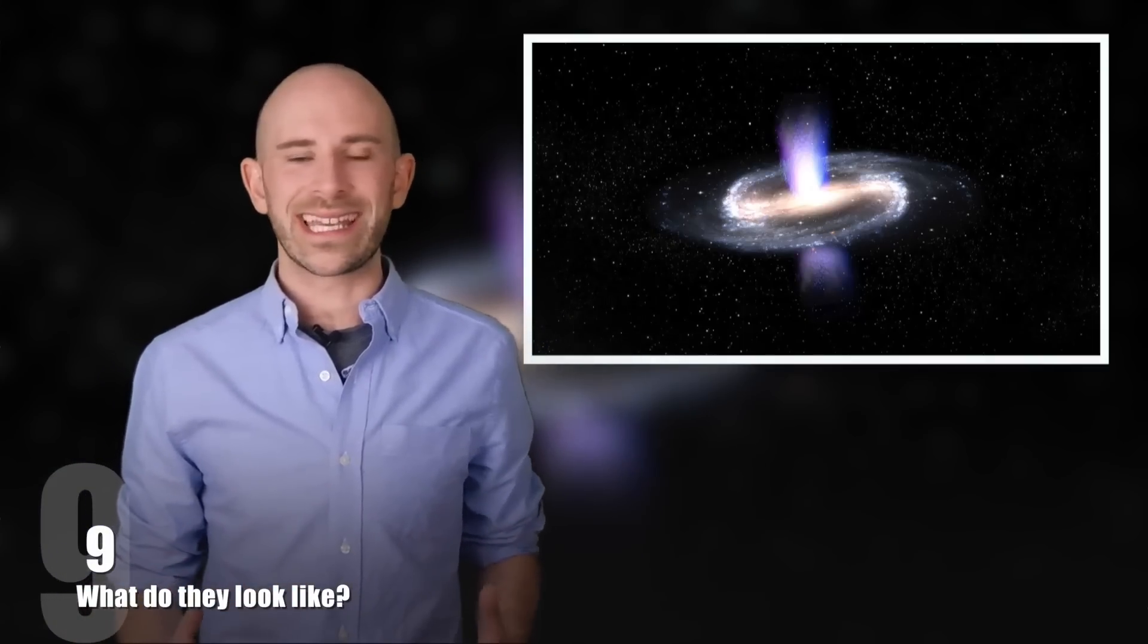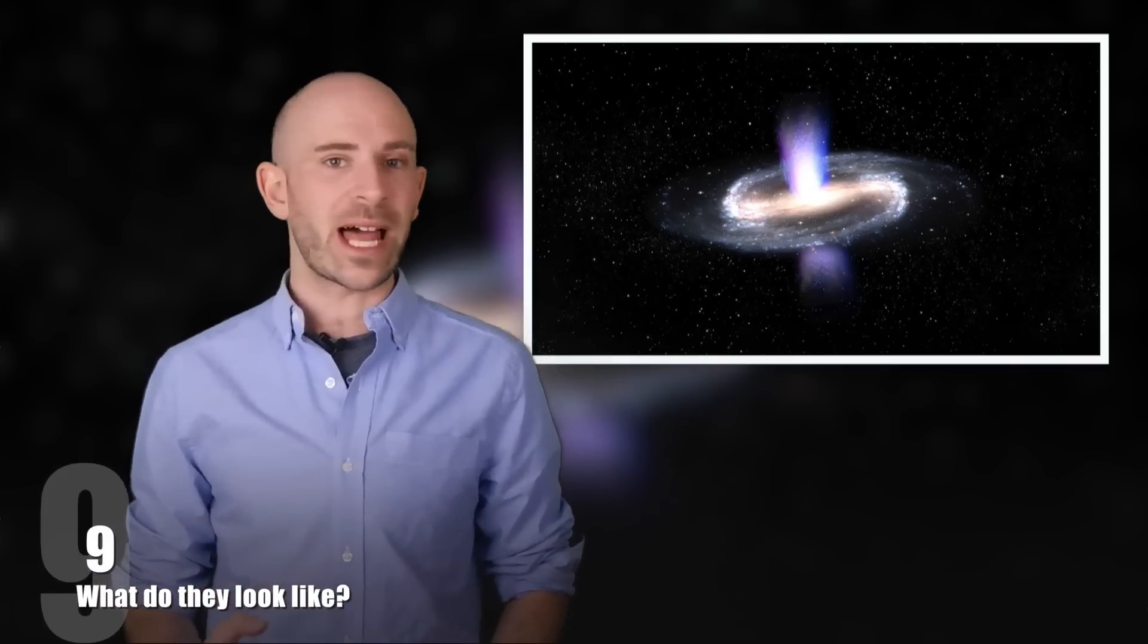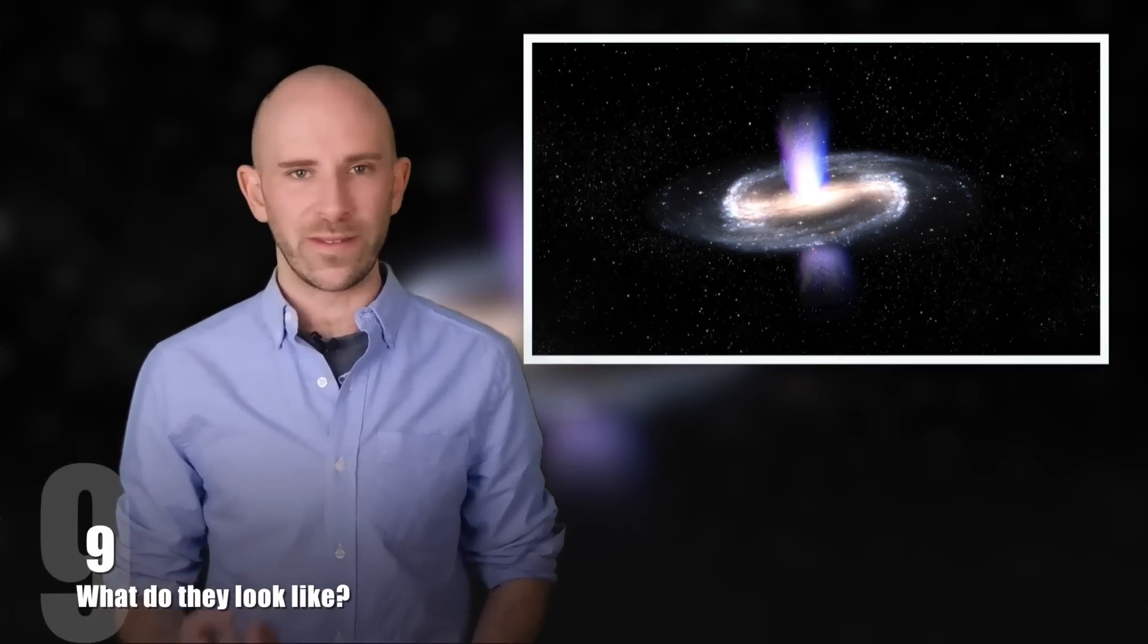What we can observe is gas when it falls into a black hole because it is heated up, which causes the gases to glow. If we had telescopes or satellites to see a black hole up close, it would look like a rotating disk with a black hole in the middle.